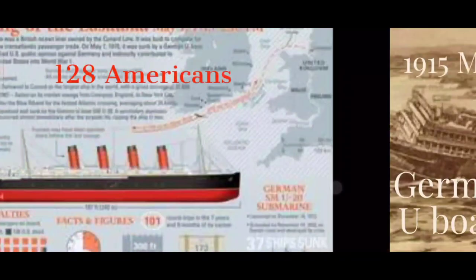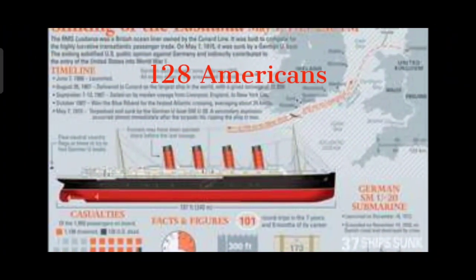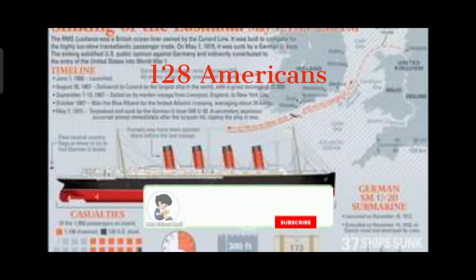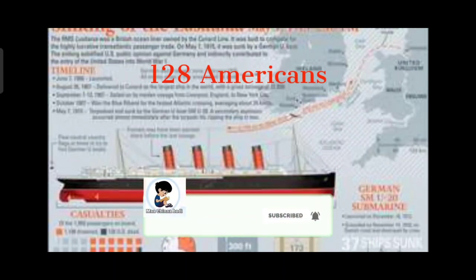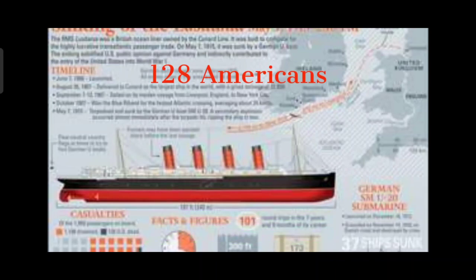About the Lusitania: it had a gross tonnage of 31,550, passenger capacity of 2,900, length of 787 feet, beam of 87 feet, 76,000 HP, and a speed of 25 knots. A knot is one nautical mile per hour.